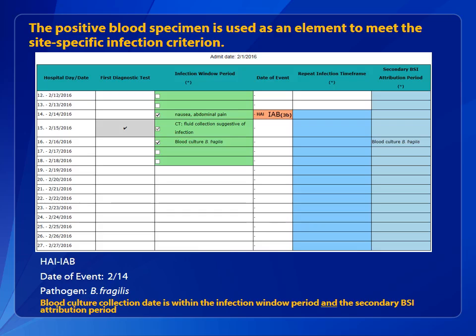In the second scenario, the positive blood specimen must be used as an element to meet the site-specific infection criterion. In this example, we have a non-surgical intra-abdominal, or IAB, infection. This patient meets IAB criterion 3B, which requires two signs or symptoms — in this case, nausea and abdominal pain — an imaging test evidence of infection, and identification of an organism in a blood specimen. Because the pathogen in the blood specimen is used to meet the IAB infection criterion, the BSI is secondary to the IAB infection. Note the blood culture collection date on 2-16 occurs within the IAB infection window period, and likewise in the IAB's secondary BSI attribution period.